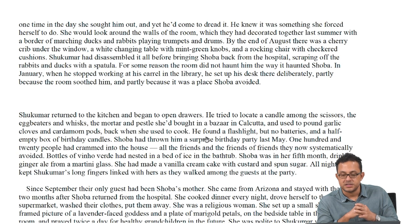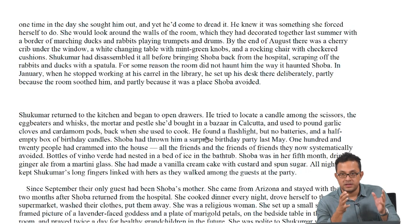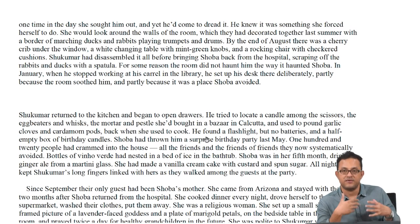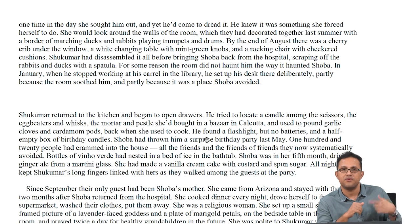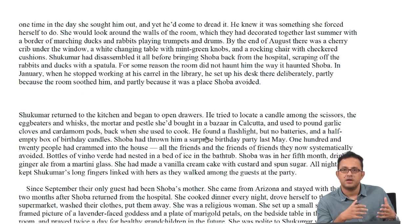Shobha had thrown Shukumar a surprise birthday party last May. One hundred and twenty people had crammed into the house — all the friends and friends of friends they now systematically avoided. The contrast is very stark: the house was once populated with warmth, festivities, happiness, and possibilities because Shobha was pregnant with a child. They were looking forward with optimism to the child's arrival. But now they have eliminated themselves quite systematically and deliberately from those people, post the tragedy of child loss.